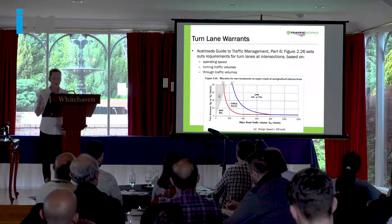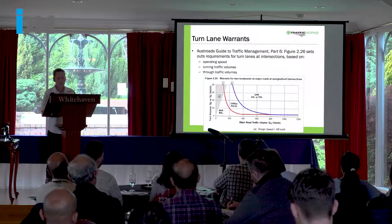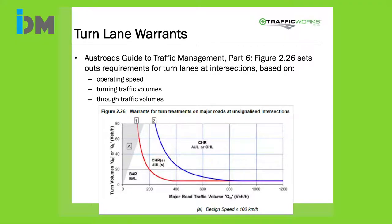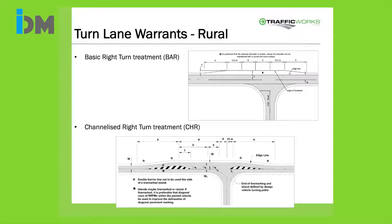At your site access, you need to consider whether a turn lane is needed to minimise delays to traffic on the main road - do we need a right or left turn lane? AusRoads Guide to Traffic Management Part 6 sets out requirements for turn lanes at intersections based on operating speed, turning traffic volumes and through traffic volumes. You plot these on a graph to determine whether the turn lane should be a basic or channelised turn lane. There are three graphs - one shown for design speeds of 100 km/h and above, and others for 70-100 km/h and less than 70 km/h. There are also rural and urban turn lane geometry designs available in the guides.